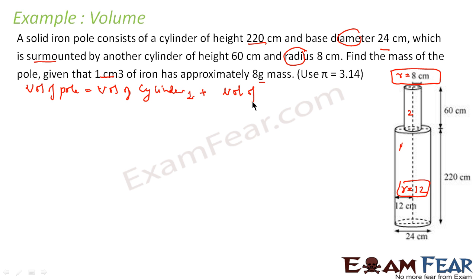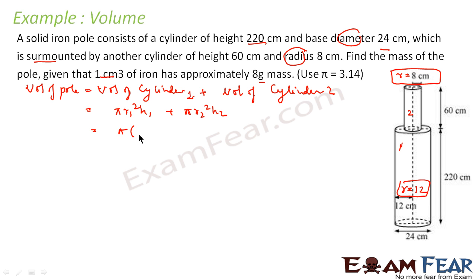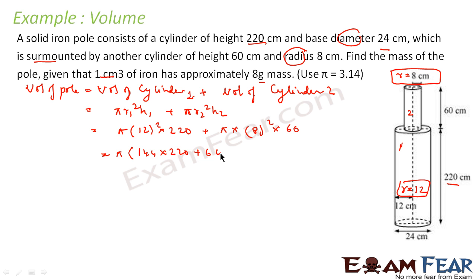Volume of the whole figure = volume of cylinder 1 + volume of cylinder 2 = πr₁²h₁ + πr₂²h₂ = π(12²)(220) + π(8²)(60) = π(144 × 220 + 64 × 60) = π(31680 + 3840) = π × 35520, which comes out to approximately 111532.8 cm³.